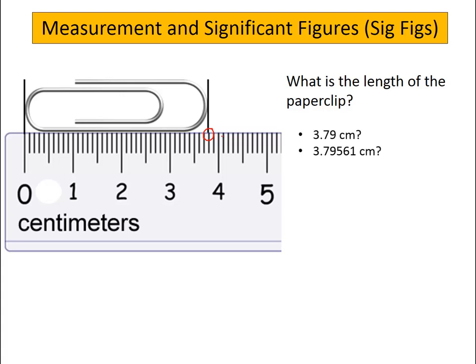So consider these two options: 3.79 centimeters or 3.79561 centimeters. It seems reasonable that the 3.79 - we could estimate that next digit - but we shouldn't be able to estimate three other digits of precision in our measurement. That seems much more precise than our measurement itself.